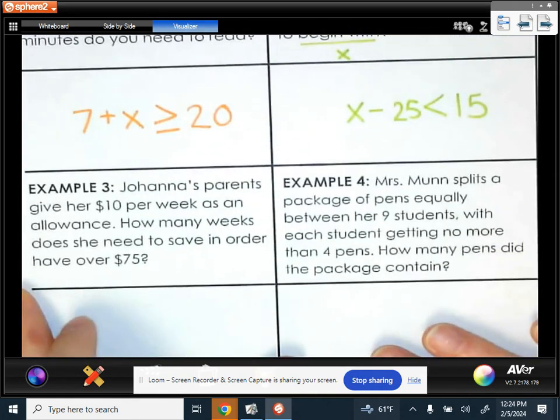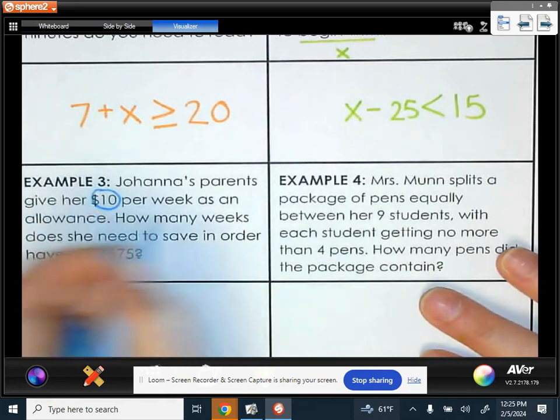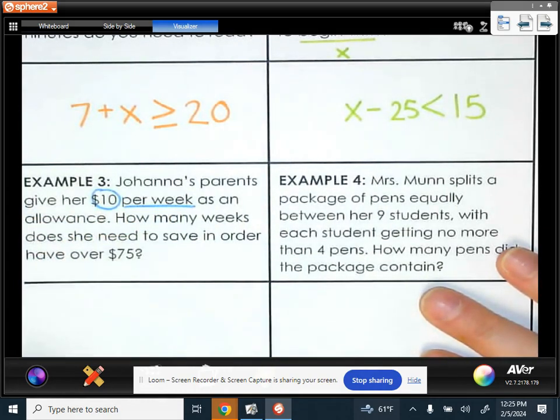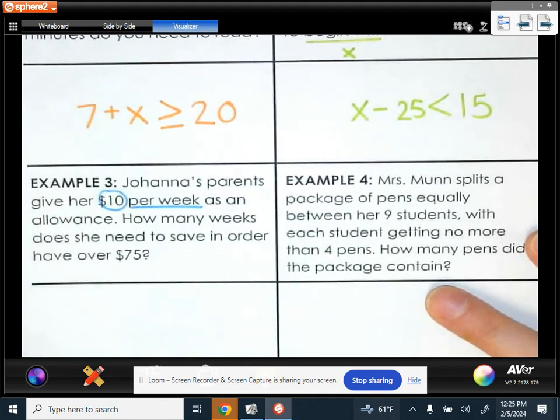Example three says Johanna's parents give her $10 per week as an allowance. So if you wanted to know how much money she has, you could take that $10 and you could multiply it by how many weeks she's been saving, and that's going to tell you how much money she has.